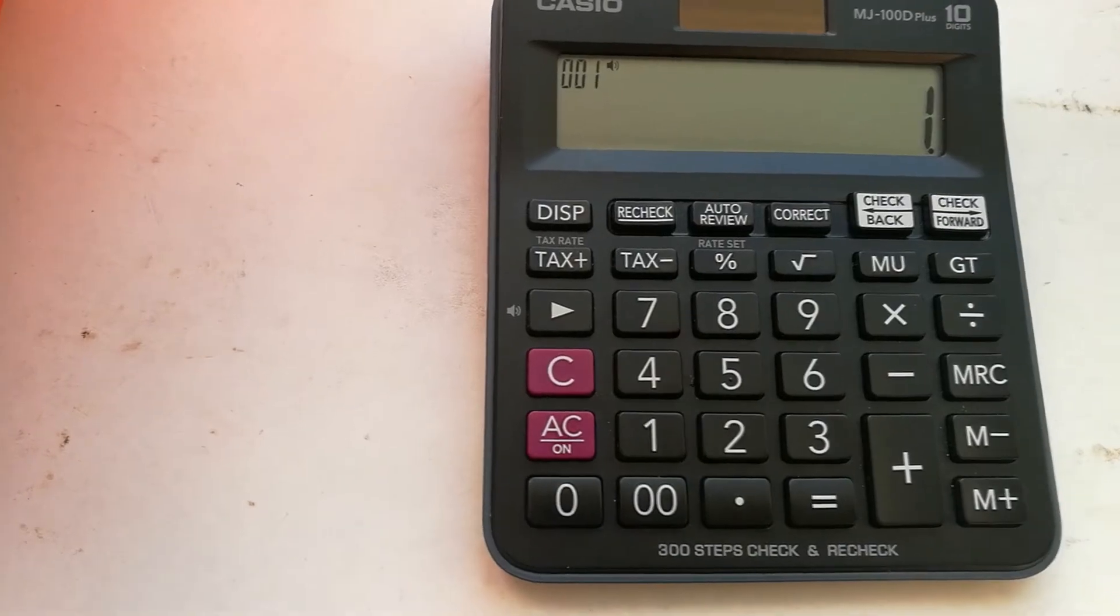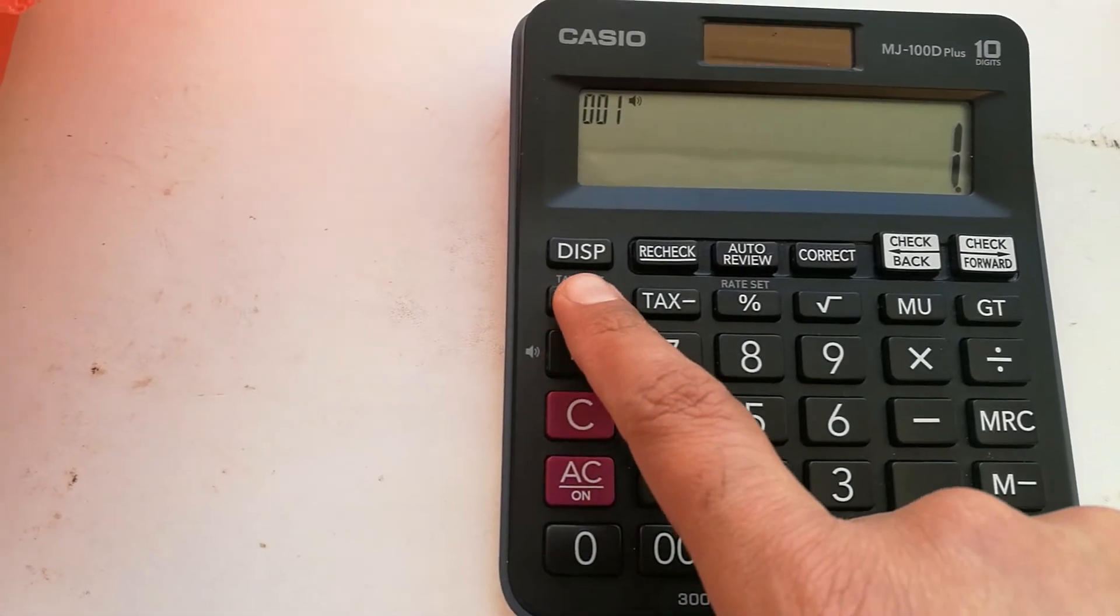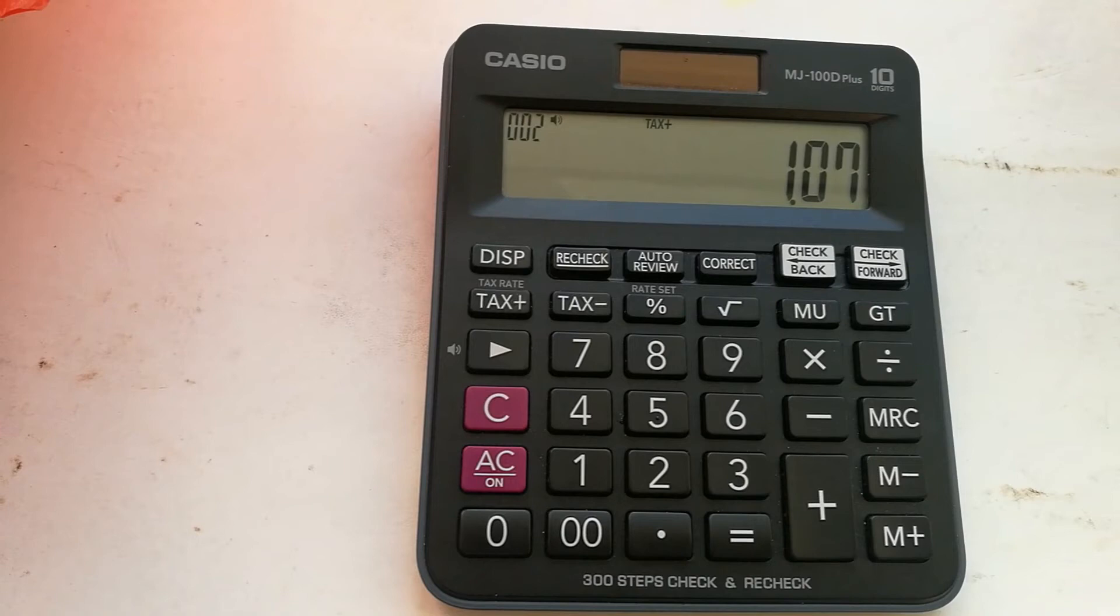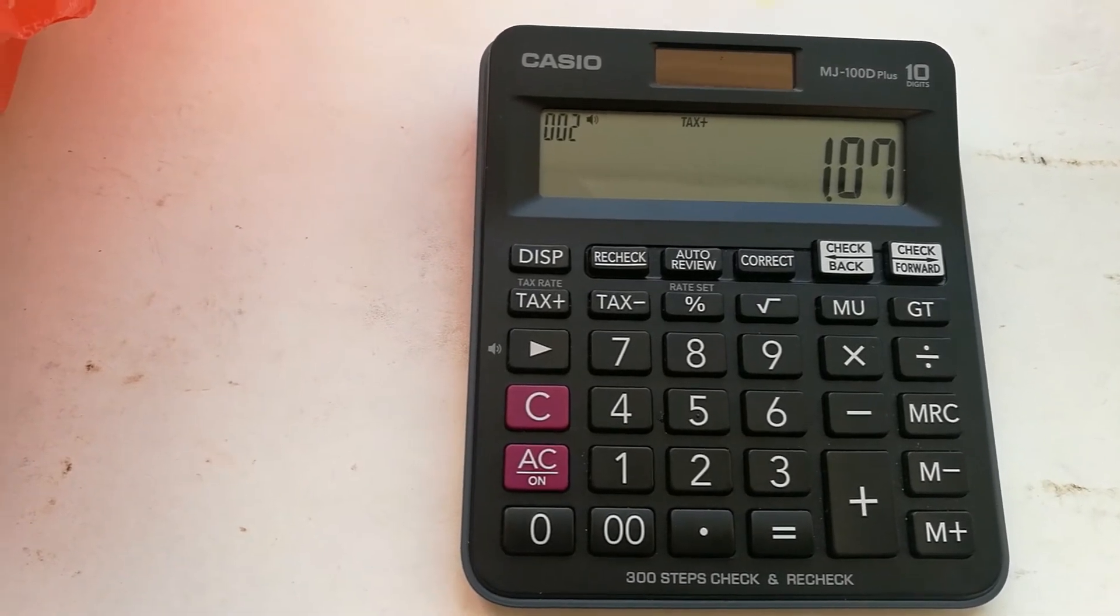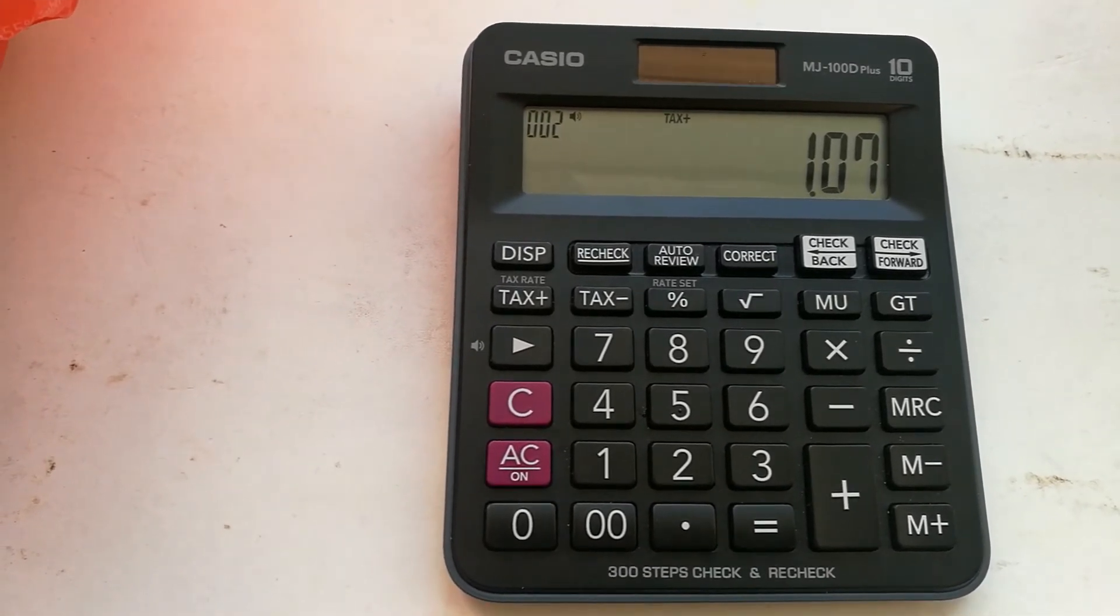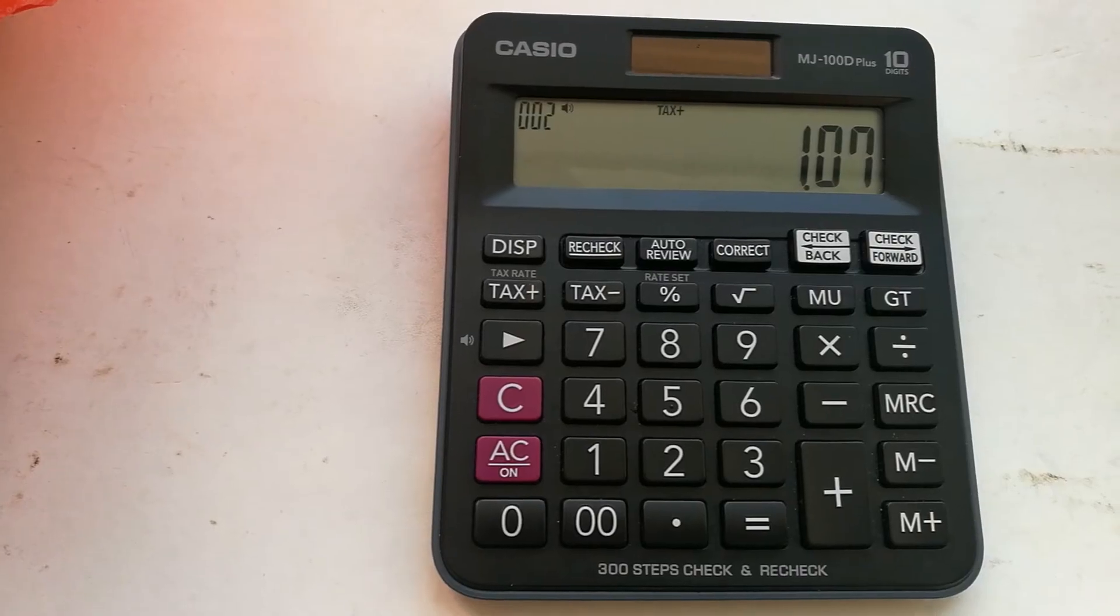Now we press any value you want to add. Let's say I will do one again, and then I will press the tax plus button. Now you can see, it is showing 1.07. So this is the tax rate on that value.